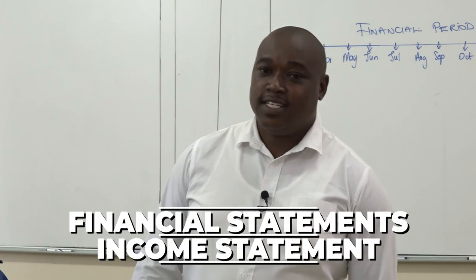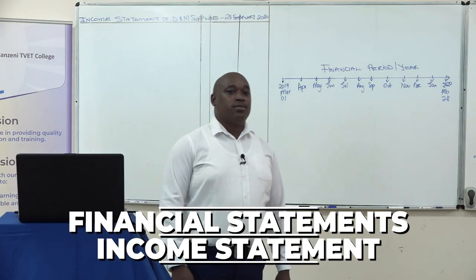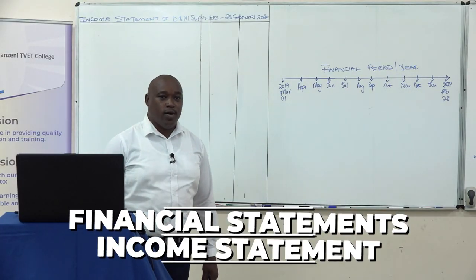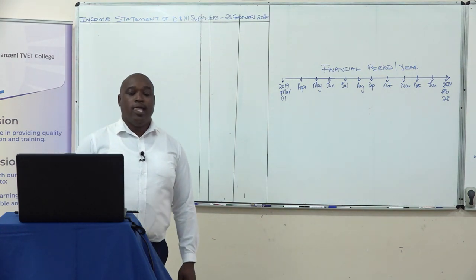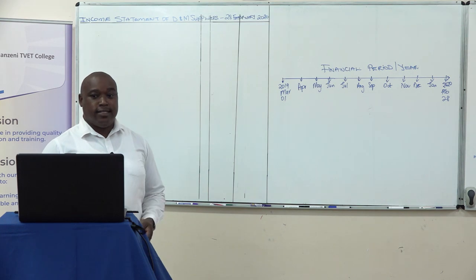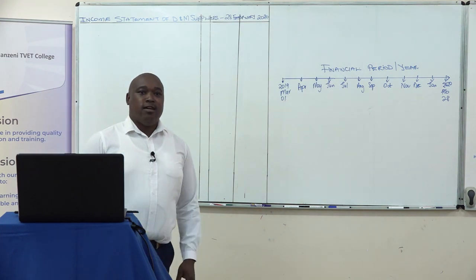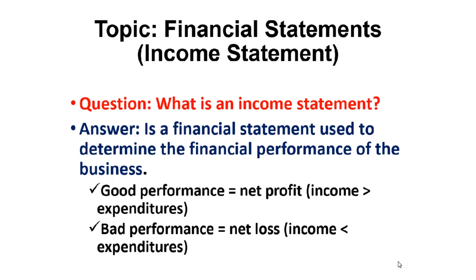Under Financial Statements we have two different types of statements according to our curriculum in Applied Accounting Level 4. The first one is an income statement. One might ask: what is an income statement? An income statement is a financial statement that is used to determine the financial performance of the business. So how can the business determine its own performance, and what do we expect to get at the end?